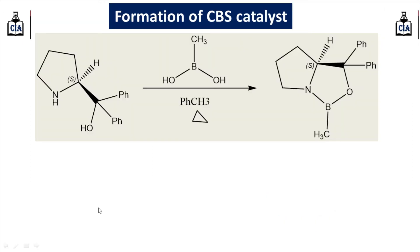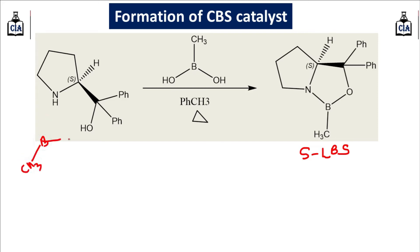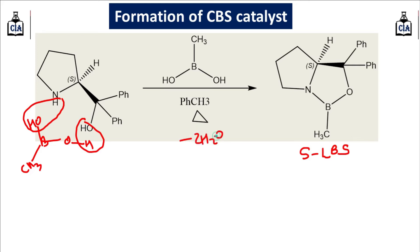The CBS catalyst is formed from a proline derivative. If we react this proline derivative with a boron compound, we get the S-CBS catalyst. Here, removal of water molecules takes place — from the nitrogen hydrogen and from the boron OH group, two water molecules are removed — and you get the final S-CBS catalyst.